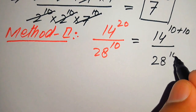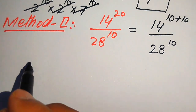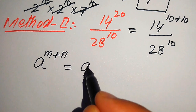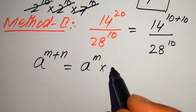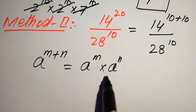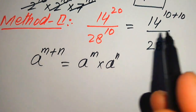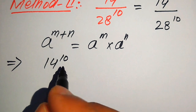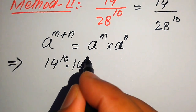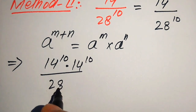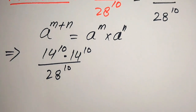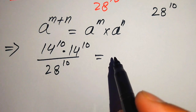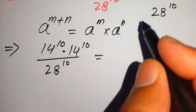We apply the exponent law a^(m+n) = a^m × a^n to break the exponent. This gives us 14^10 × 14^10, divided by 28^10. Now all three terms share the same exponent of 10.